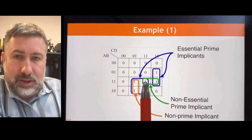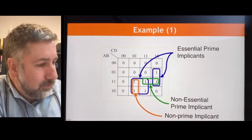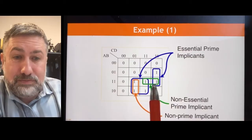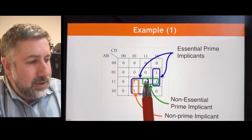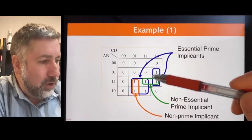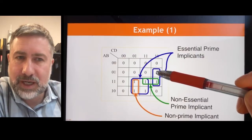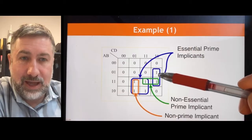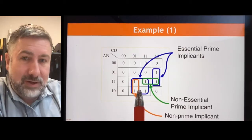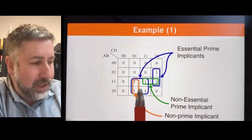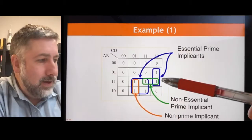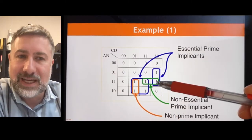This one here is a prime implicant because it is as big as it can be — there's no way to make it bigger. But it covers ones that are both covered by some other group. This one is covered by this group, and this one is covered by this group, and that means we don't need this — it's non-essential. One of these terms is covered by a group of at least the same size, and that means this one is essential. All of these ones are in a group that can't be covered by another group of that same size any other way, so they all contribute to this group being essential. But you only need one minterm in a group to make that term essential.